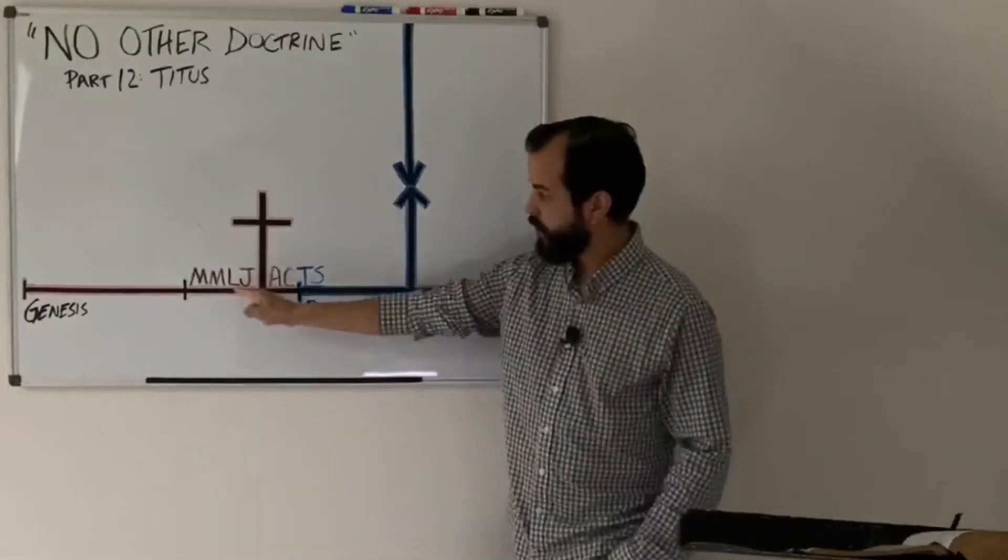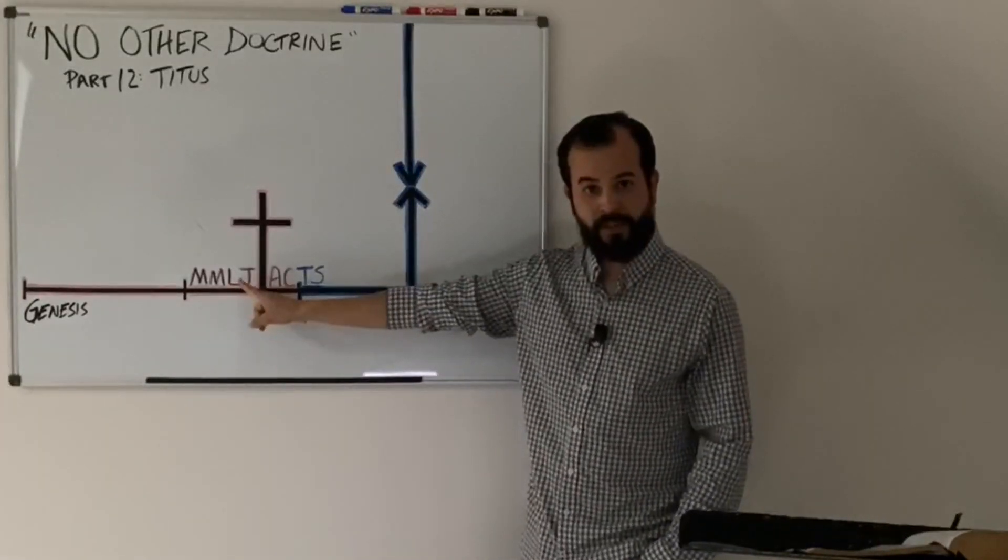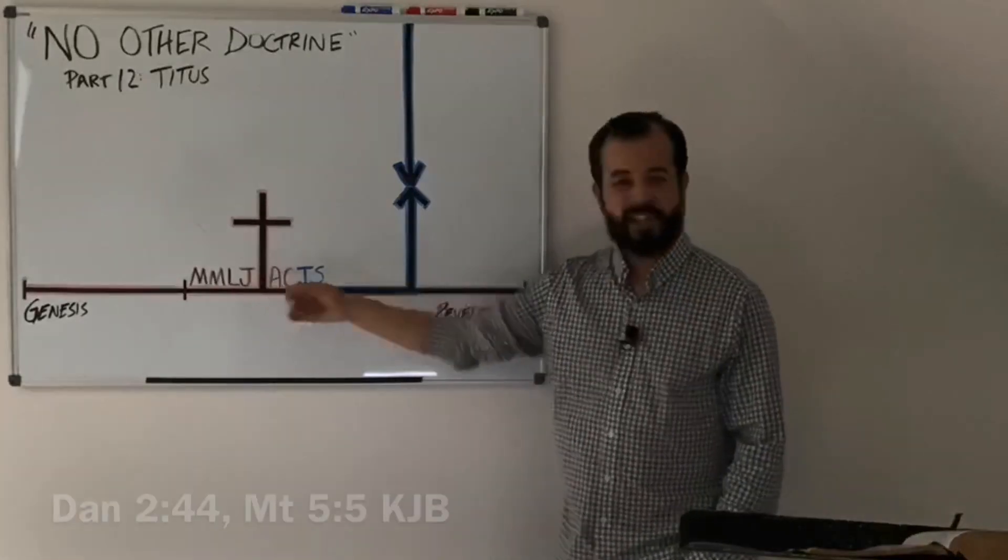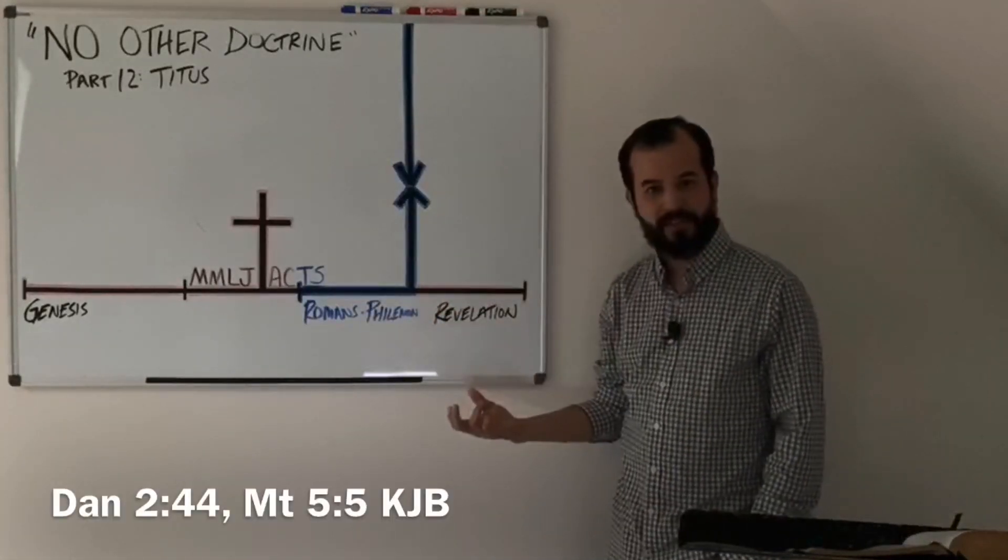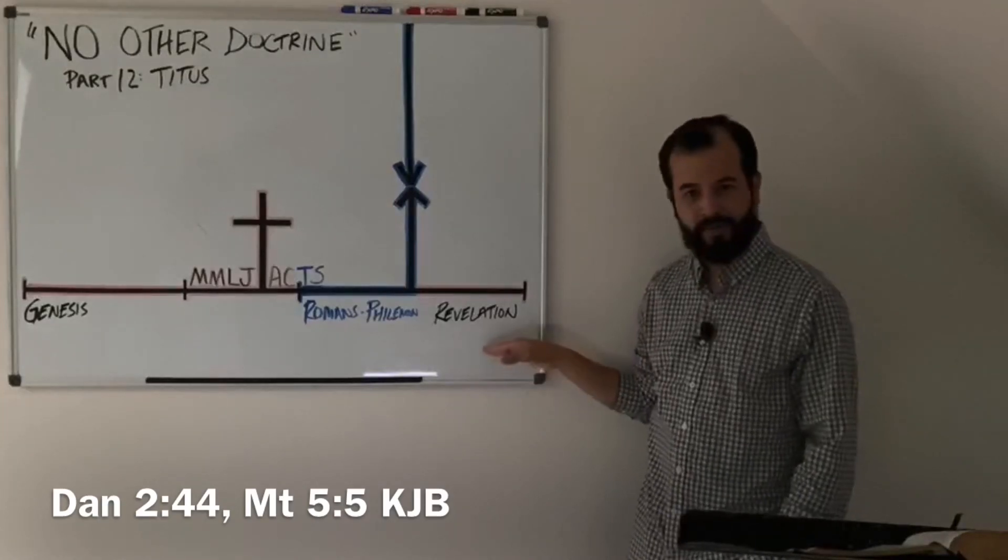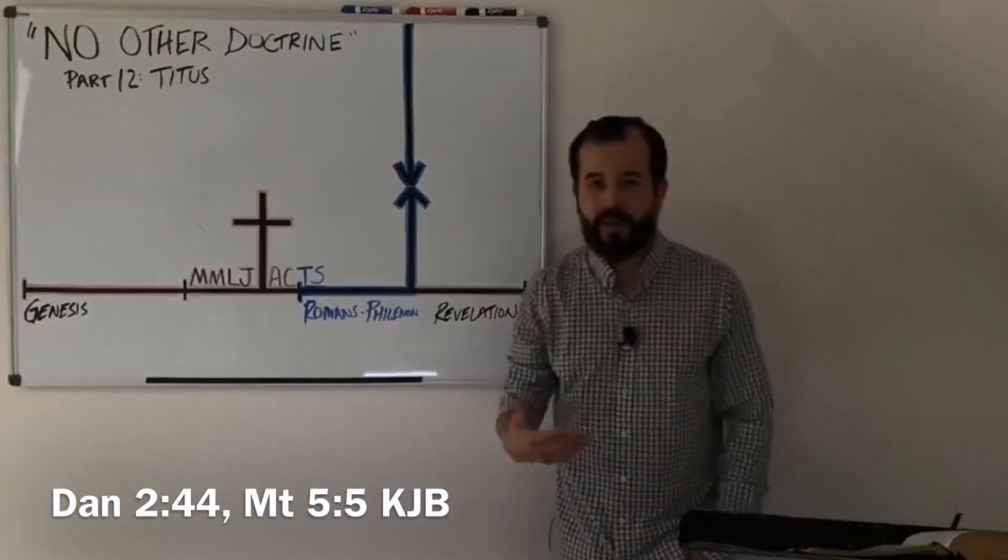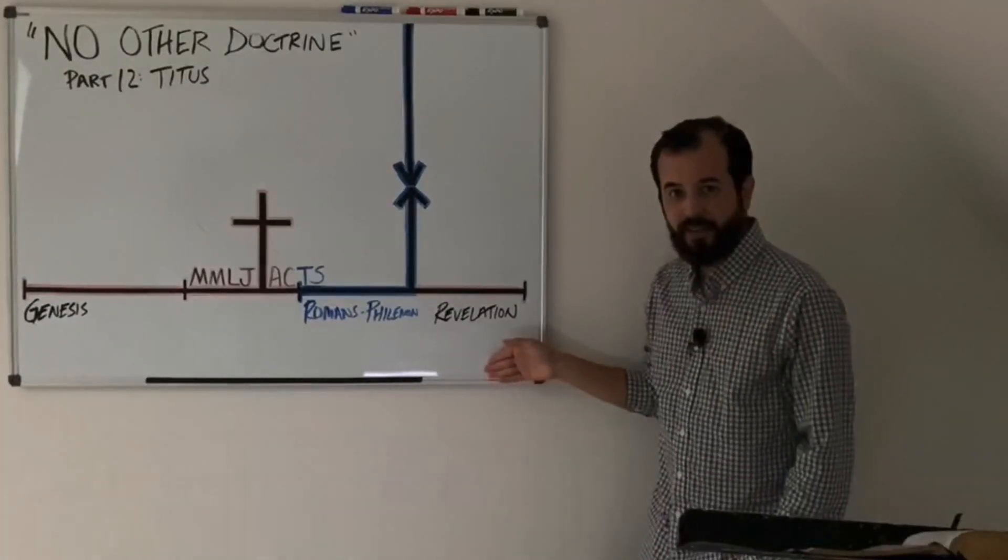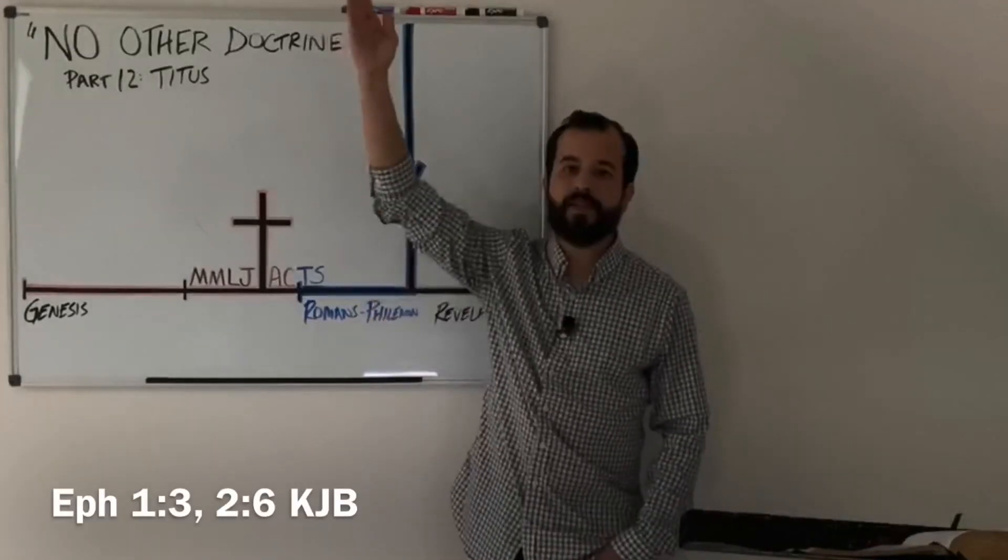Because Peter and the 11, the 12 apostles, they're inheriting the kingdom of heaven here on earth. They're going to be here on earth forever. The church, the body of Christ, we're not inheriting the earth. We're inheriting heavenly places.